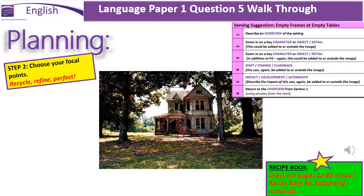The first element of your image that should be identified is the overview of the setting — the sky and the weather. You then need to decide what you're going to zoom in on — what key object or detail in the image. Where's your character going to be? Are they going to be inside the house or outside the house? What's your flashback going to be, and how are you going to develop that flashback?